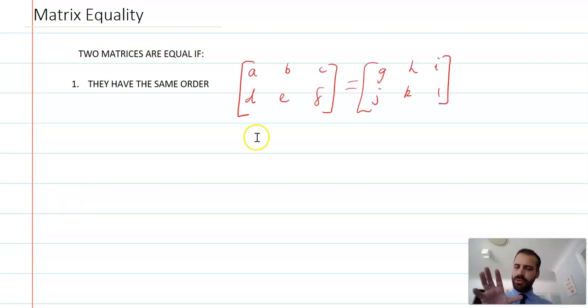They possibly could be equal. Now I'm not saying that these two matrices must be equal, but I'm saying maybe they're equal because they have the same order.